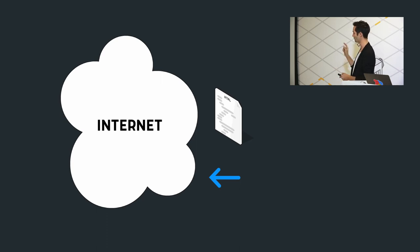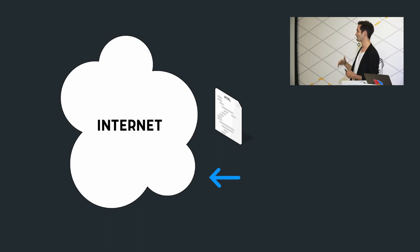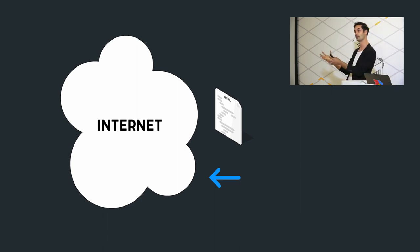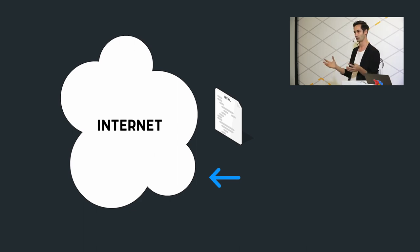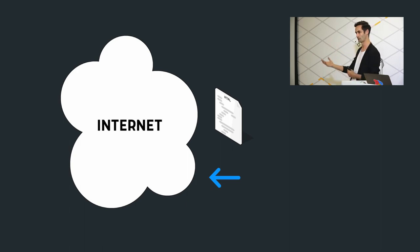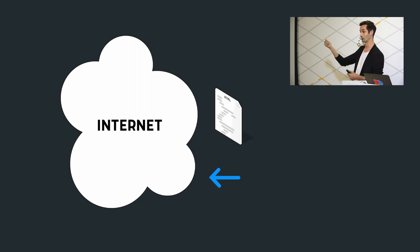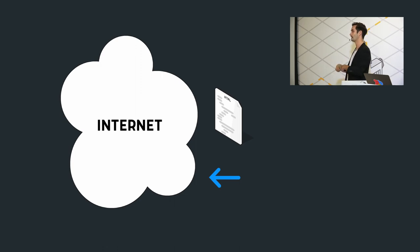What does it look like to have data go into that cloud thing, instead of away from it? That's what we call the data bazaar. In software, we have two models: the cathedral model — a small team working on a closed-source project where all contributors are known — and the open-source bazaar model, where you'll accept a pull request from anybody on the planet, so long as it's a good change. A data bazaar would be a place where we can audit and collaborate on each other's work.